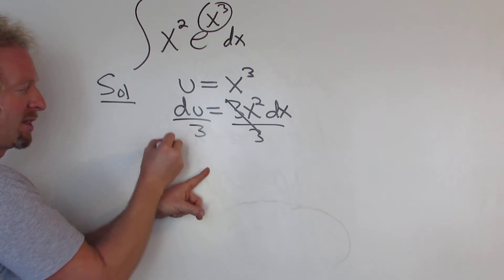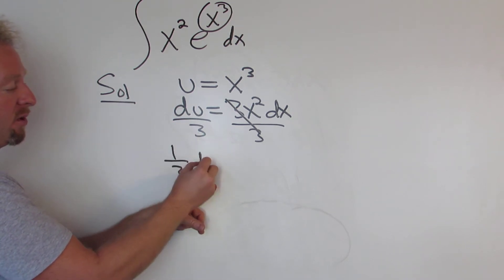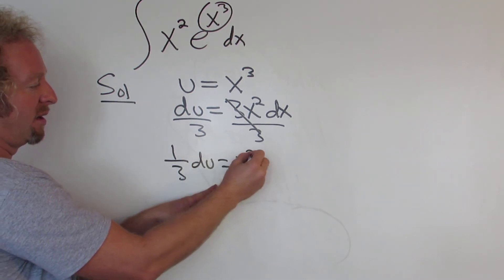So we have, I'm going to write it like this: 1 third du equals x squared dx.